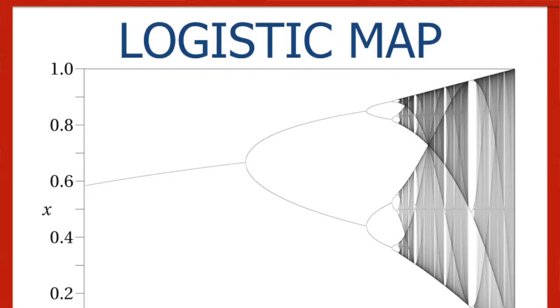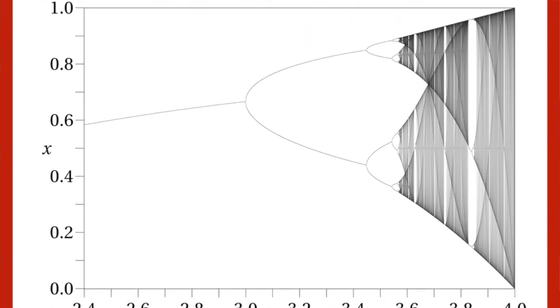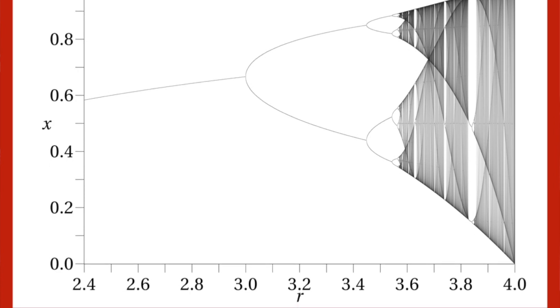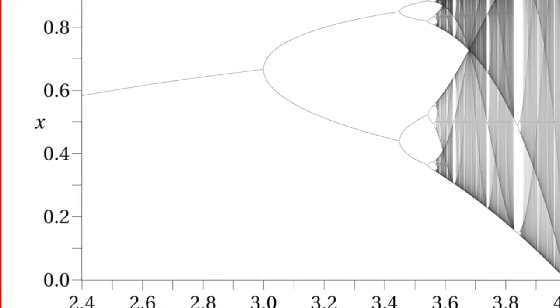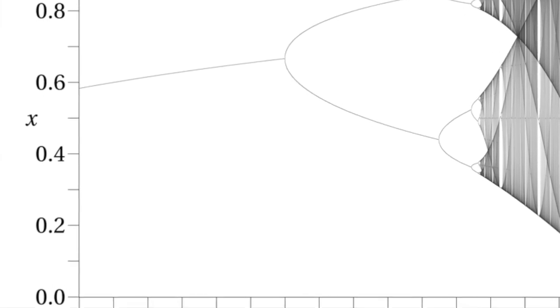Let's have a look at the orbit diagram or bifurcation diagram for the logistic map. We are plotting here the time series after the transient for different values of r. Observe the left part of the diagram. There you can see the periodic behavior. After the transient, the system has a steady value.